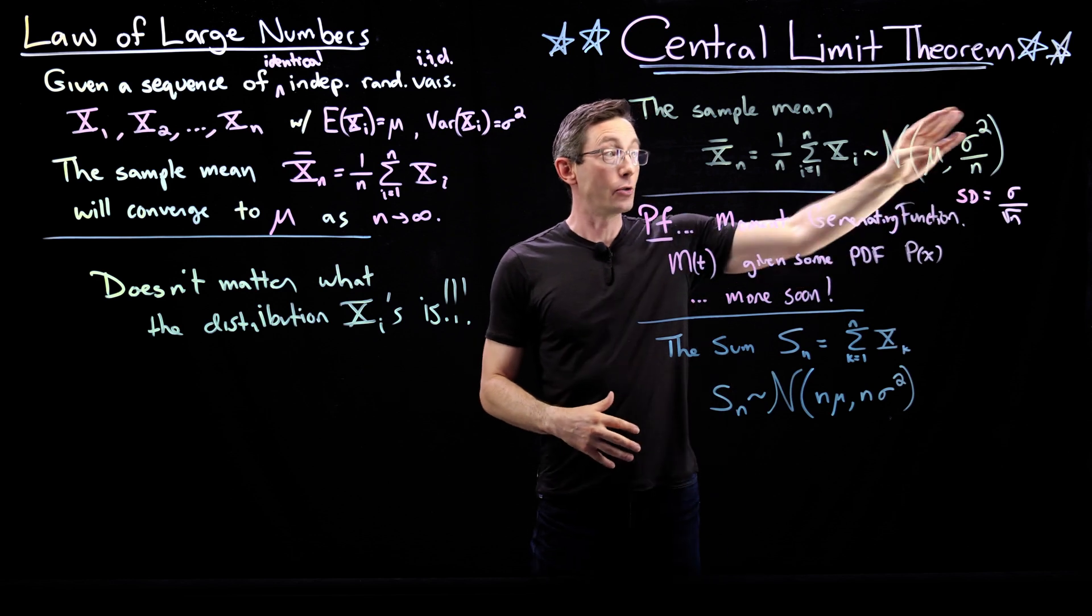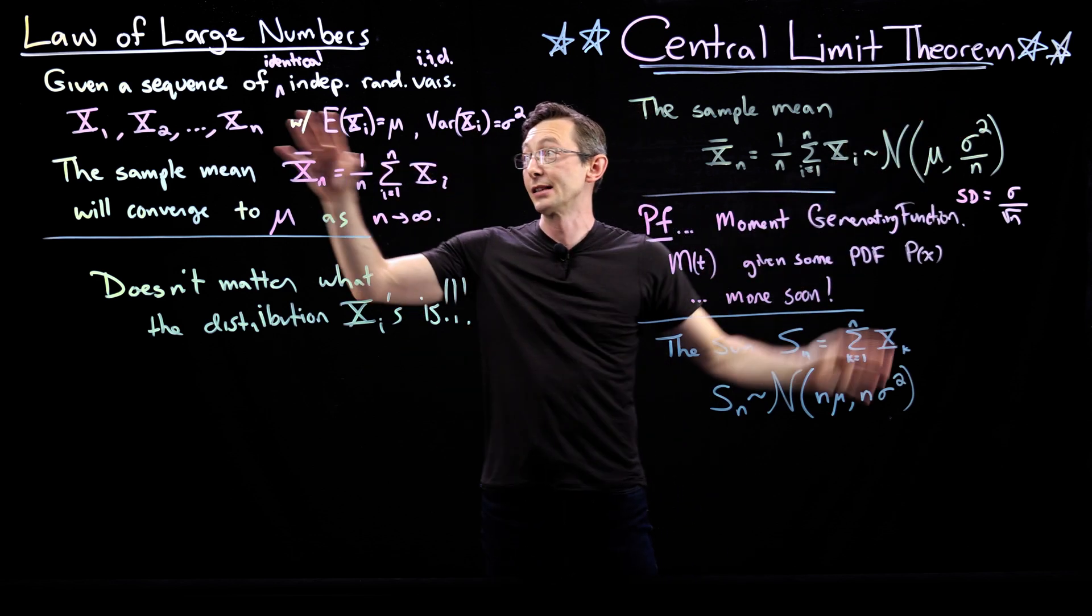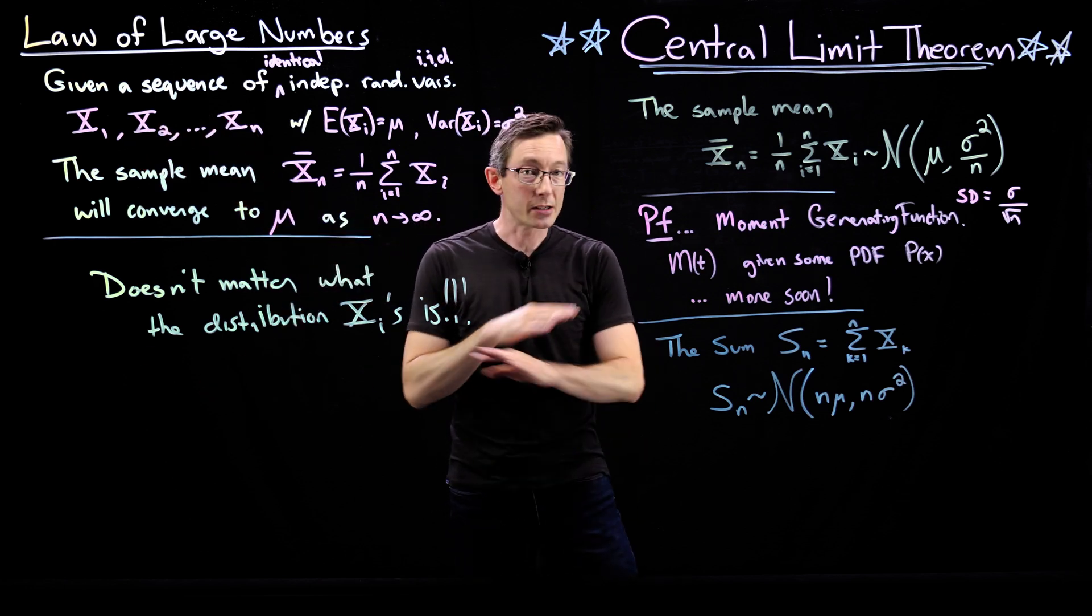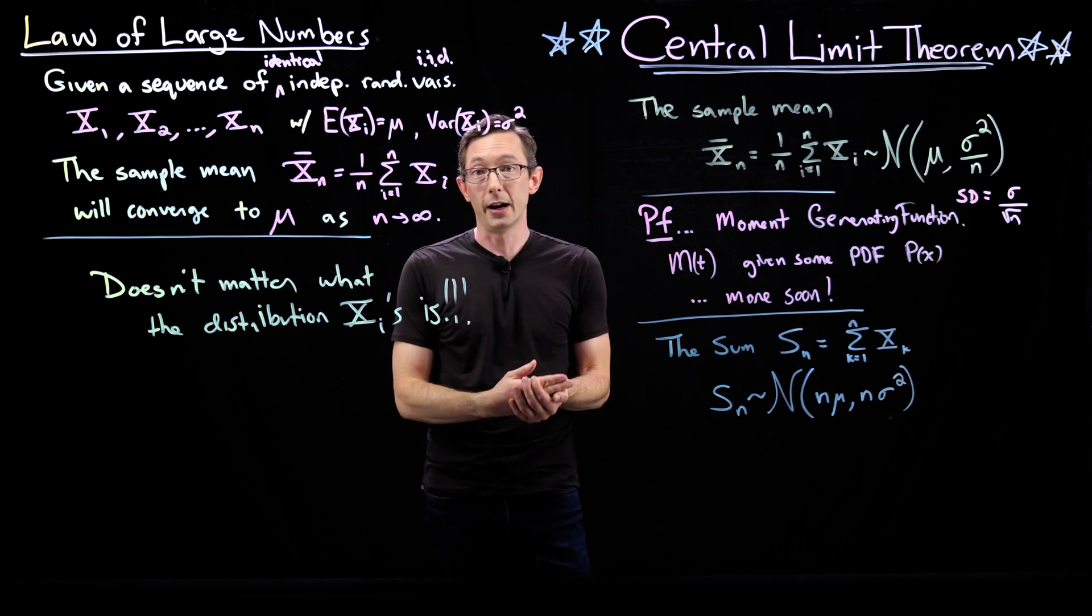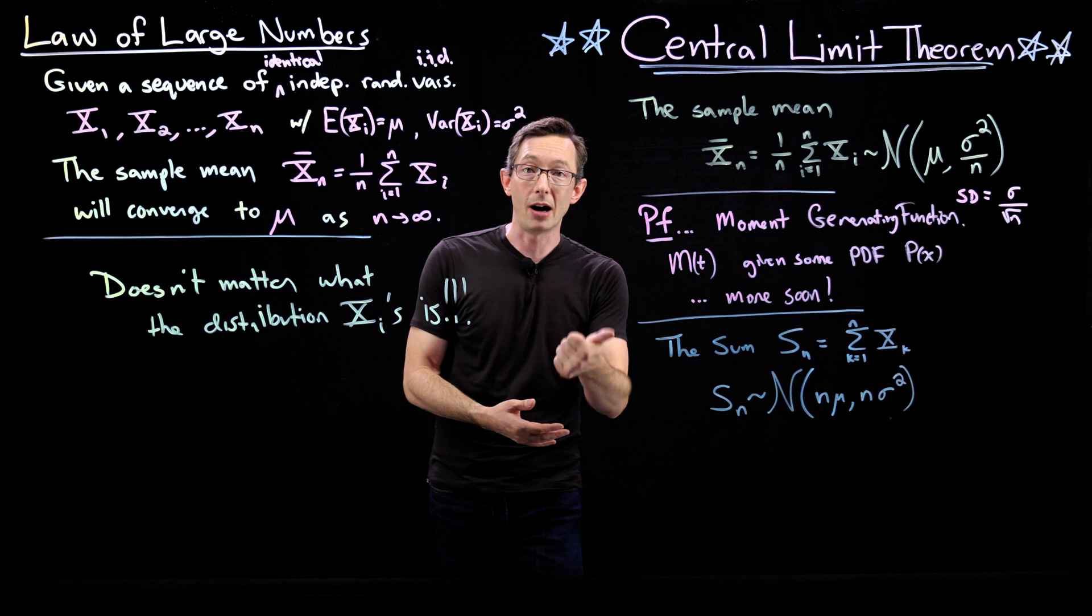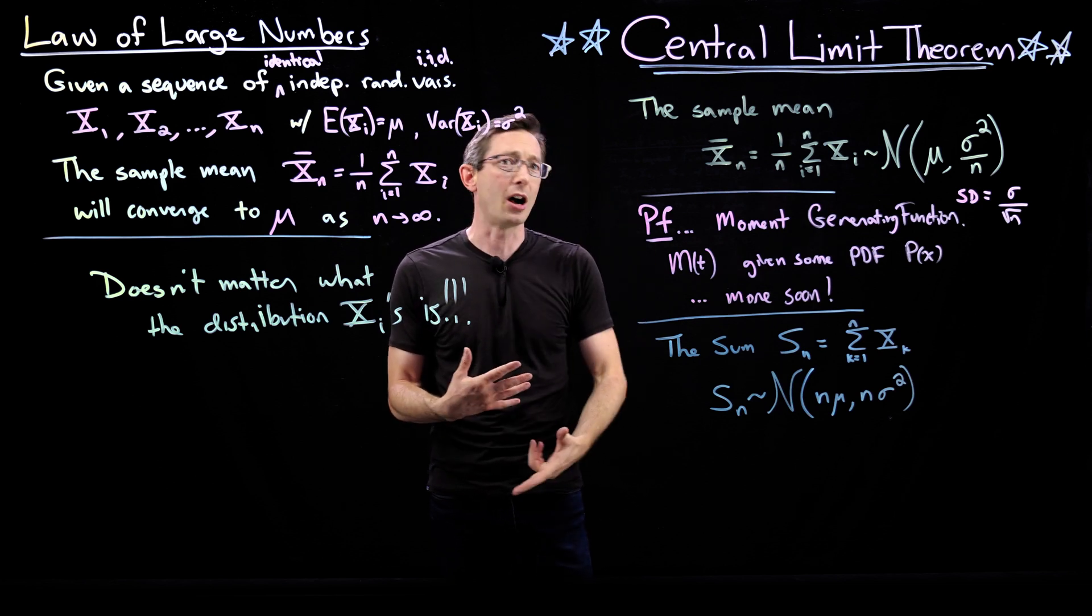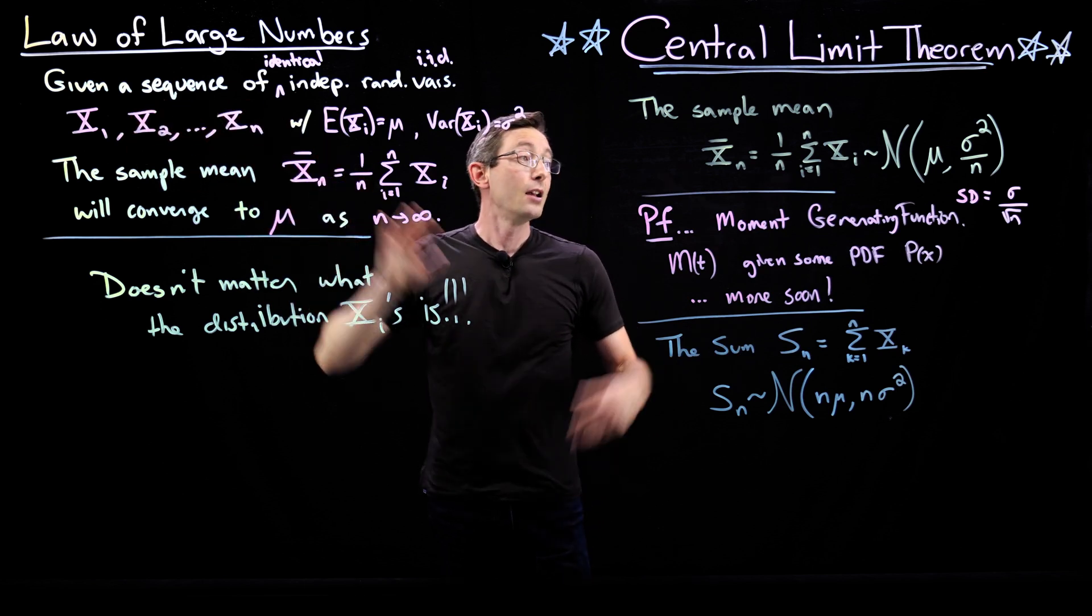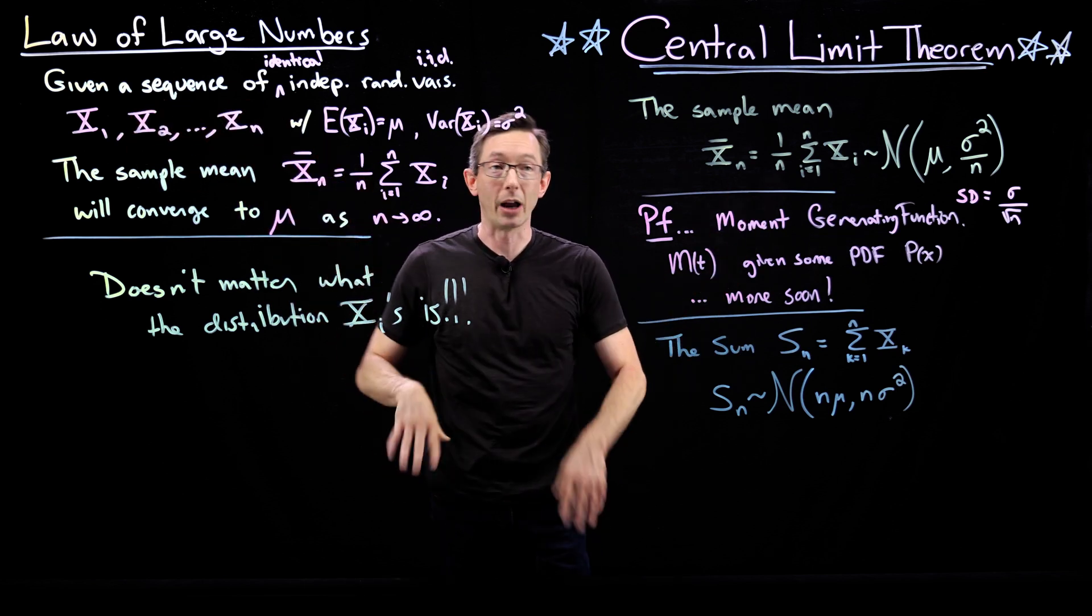And you can quantify its mean and its variance in terms of the mean and variance of these independent random variables, regardless of what their distribution is. Just super profound, kind of unexpected result, cornerstone probability and statistics. We're going to use this all the time when we do hypothesis testing, experimental design, confidence intervals, basically anything where we are using data and trying to make some statistical statement about that data. Okay. Thank you.